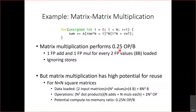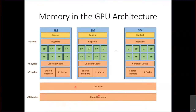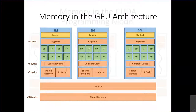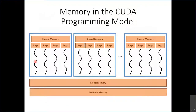We considered how to improve the compute-to-global-memory-access ratio, and said one way is by using shared memory. In the GPU architecture we have global memory, hardware-managed caches, and shared memory that sits on the SM — much faster than global memory but much smaller. For data accessed multiple times, one thread can load it from global memory to shared memory, and then multiple threads access it from shared memory. In CUDA, threads in the same thread block have access to shared memory, allowing collaboration to minimize global memory accesses and reuse data.